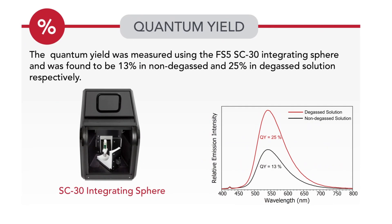The next step was a photoluminescence quantum yield measurement to characterize the efficiency of the TADF material. The test was carried out in the SC30 integrating sphere accessory, using a solution of CZDBA with and without degassing. The observed quantum yield decreases by half in the presence of oxygen, from 25% to 13%. Since the triplet state is quenched by oxygen, this is further evidence that TADF emission is taking place.